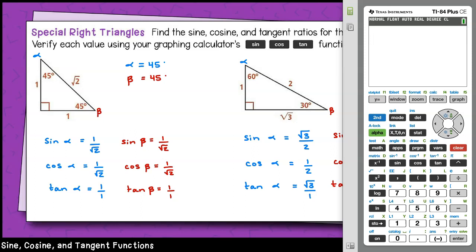For the 45-45-90 right triangle, notice that our ratios are pretty much the same across the board. That's because we have two congruent angle measures. So sine of 45 is going to be 1 divided by the square root of 2. Cosine of 45 will also be 1 divided by the square root of 2. And finally, tangent of 45 is just going to be 1 divided by 1, since the two 45-degree angles produce congruent sides.